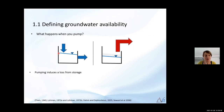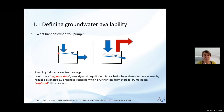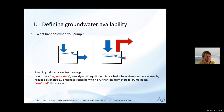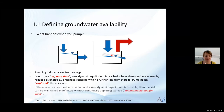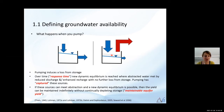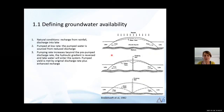Over time — known as the response time — this aquifer will reach a new equilibrium where there's no further loss from storage. The abstracted water, shown with the red arrow, is met by reduced discharge and/or enhanced recharge. We can say that the pumping has 'captured' these sources. An important concept is that if these sources can meet the abstraction rate and a new dynamic equilibrium can be formed, then this abstraction rate can be maintained indefinitely — groundwater levels won't continue to decline if we can capture these sources.